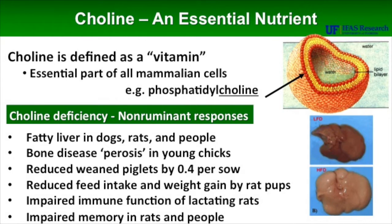In young chicks, choline is included in the diet in order to prevent slip tendon or perosis. In a series of 22 studies or trials involving over 500 sows, it was determined that a deficiency of choline resulted in a reduced weaned piglets by 0.4 per sow, so we know it's necessary for the lactating sow as well. Regarding rats, lack of choline reduces feed intake as well as weight gain by rat pups.